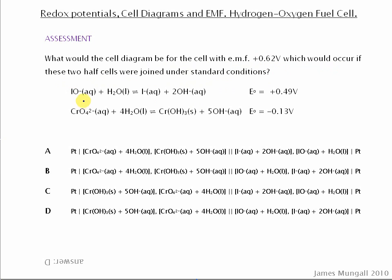And you're giving in IO minus with H2O going to I minus and 2OH minus, positive 0.49. You're giving a chromate, chromium species, becoming a chromium hydroxide.